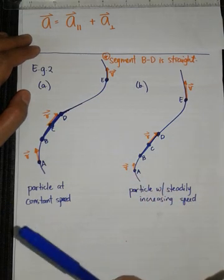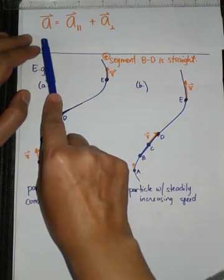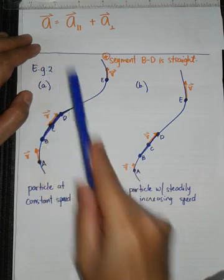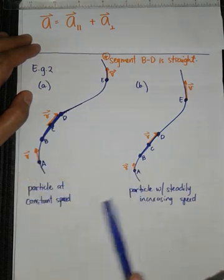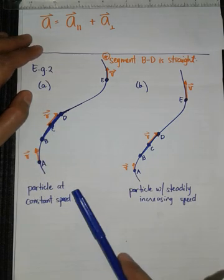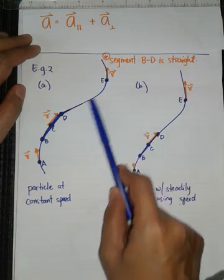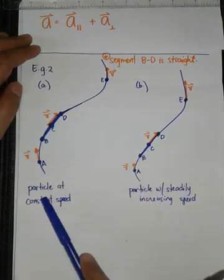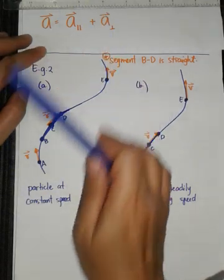The requirement is for us to sketch the acceleration vectors at points A, C, and E. And then there are 3 cases here. So for case A, this is the kinematics of the motion of particle in A. It's moving at constant speed.